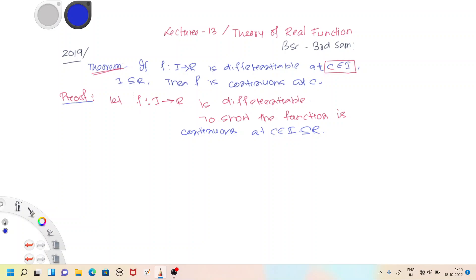Since the given function f from I to R is differentiable, therefore since f is differentiable, we have limit x approaches to c of [f(x) - f(c)] divided by [x - c] exists.